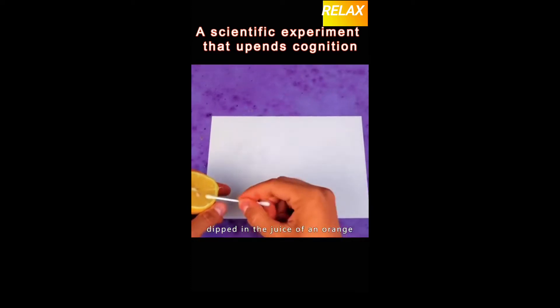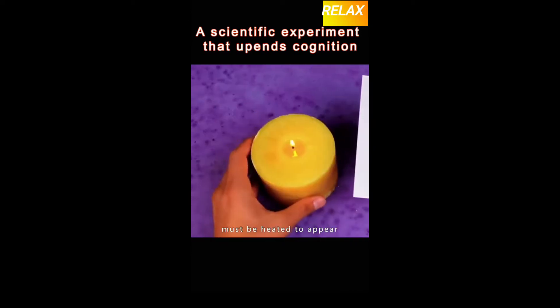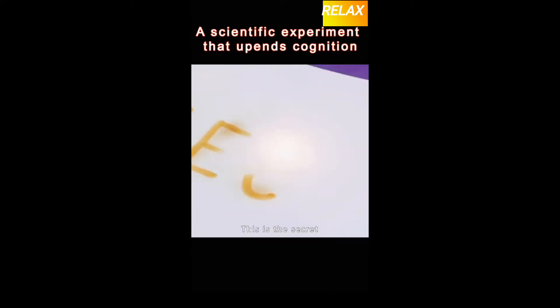Write on paper with a swab dipped in the juice of an orange. The written words must be heated to appear. This is the secret of the wordless book.